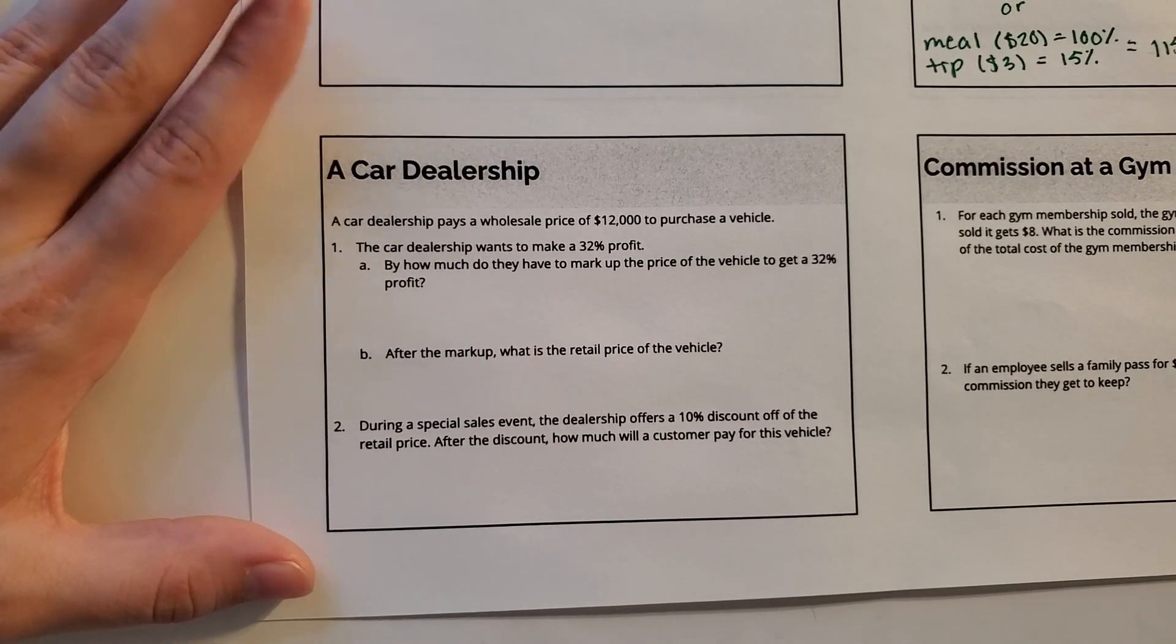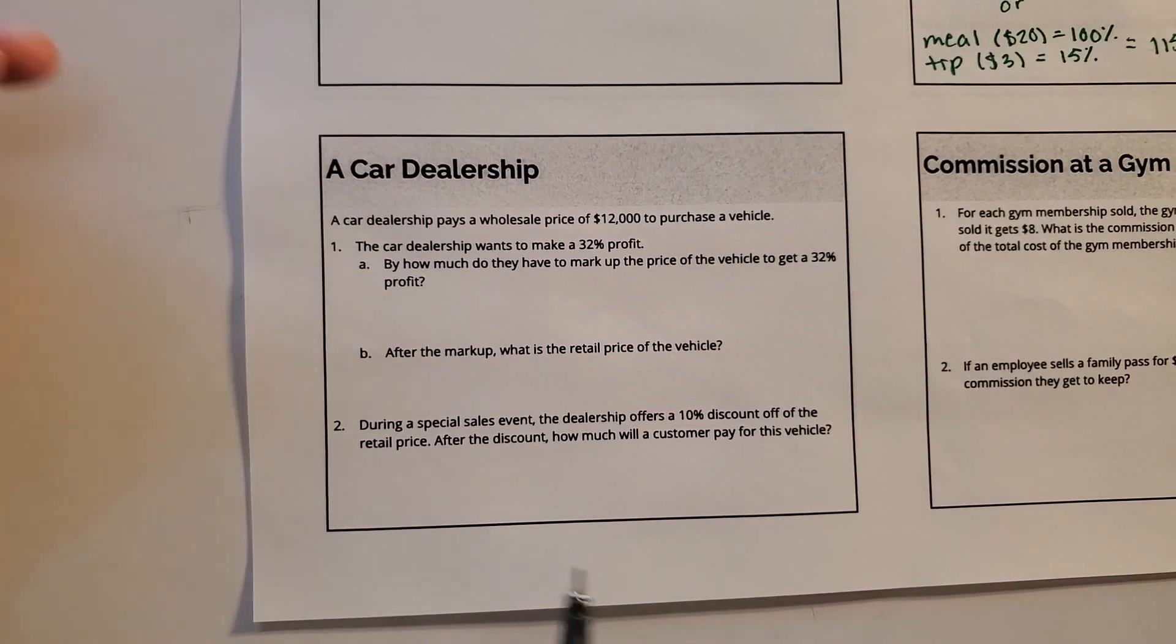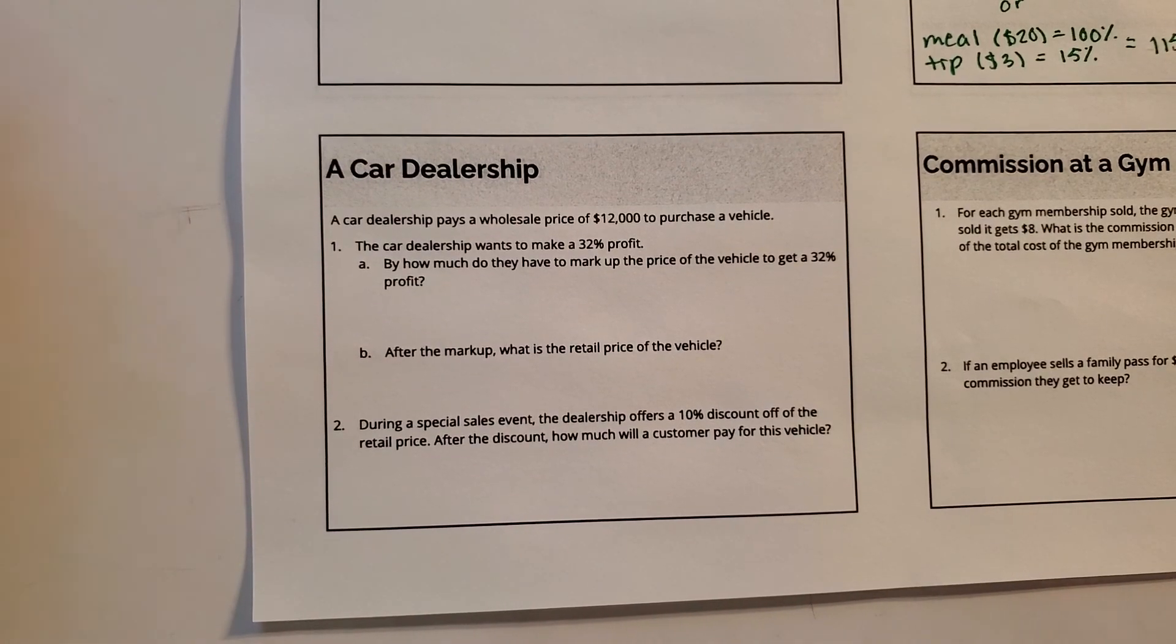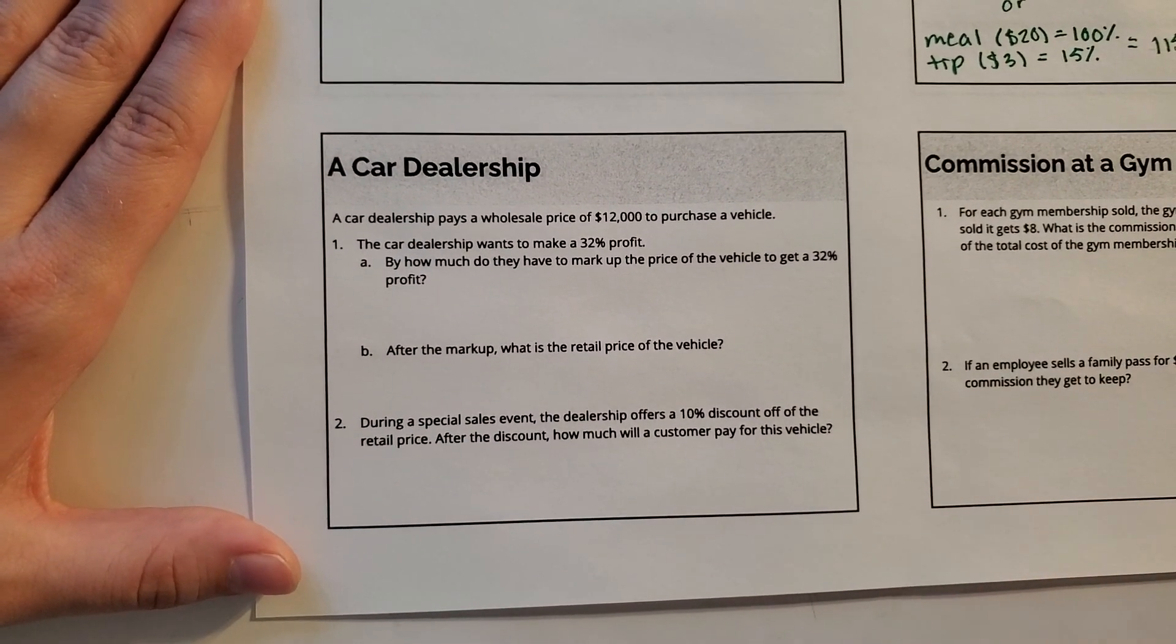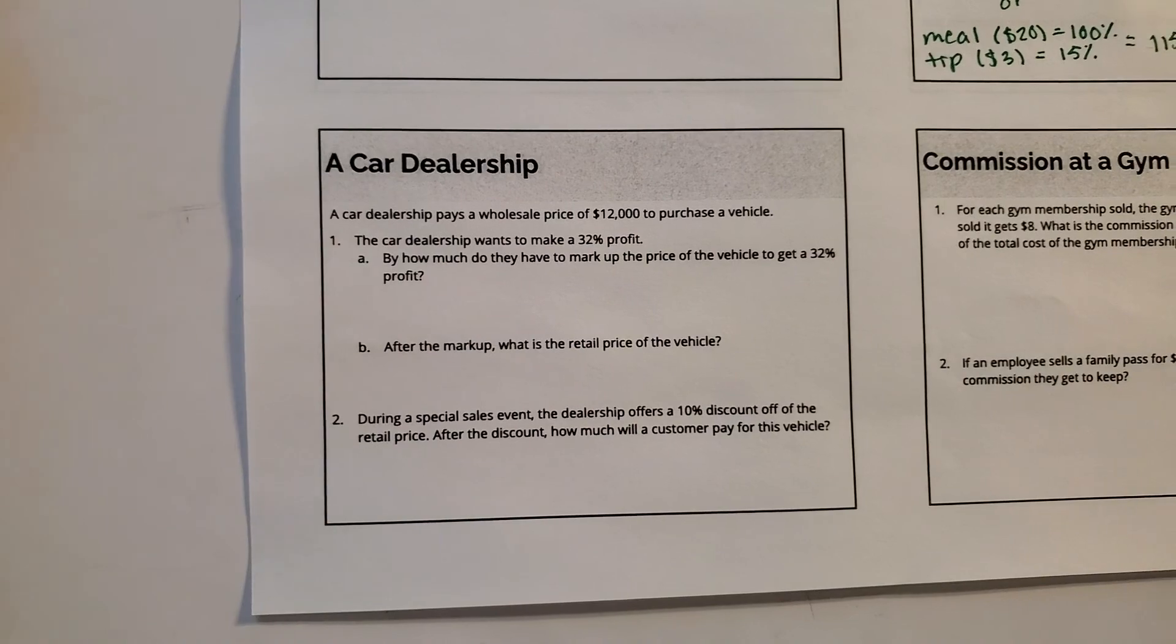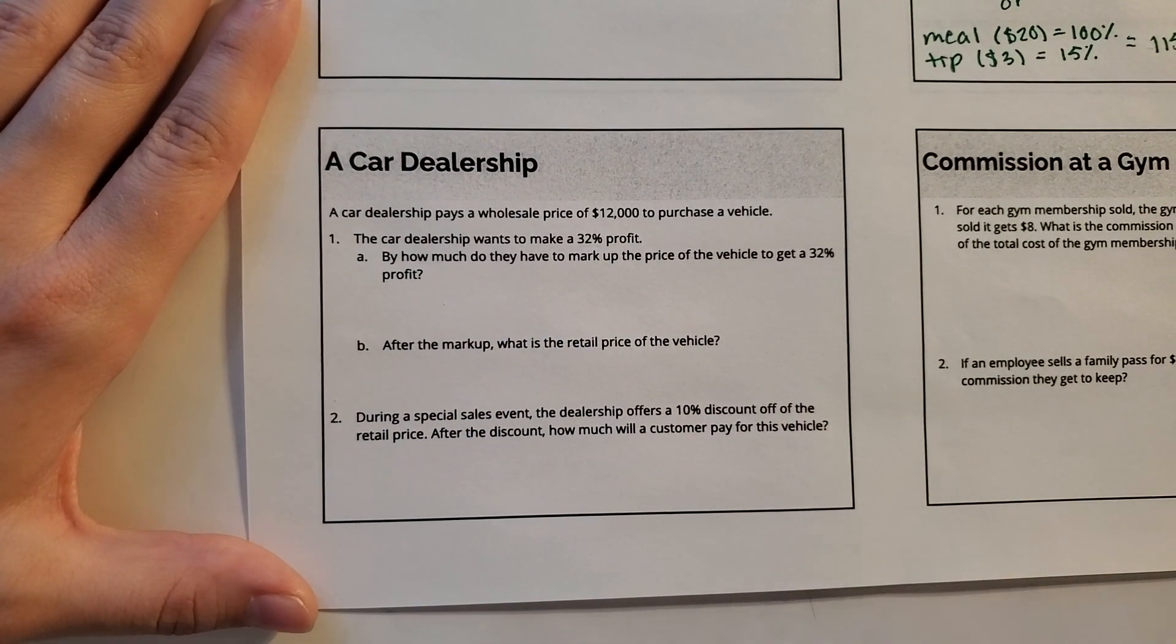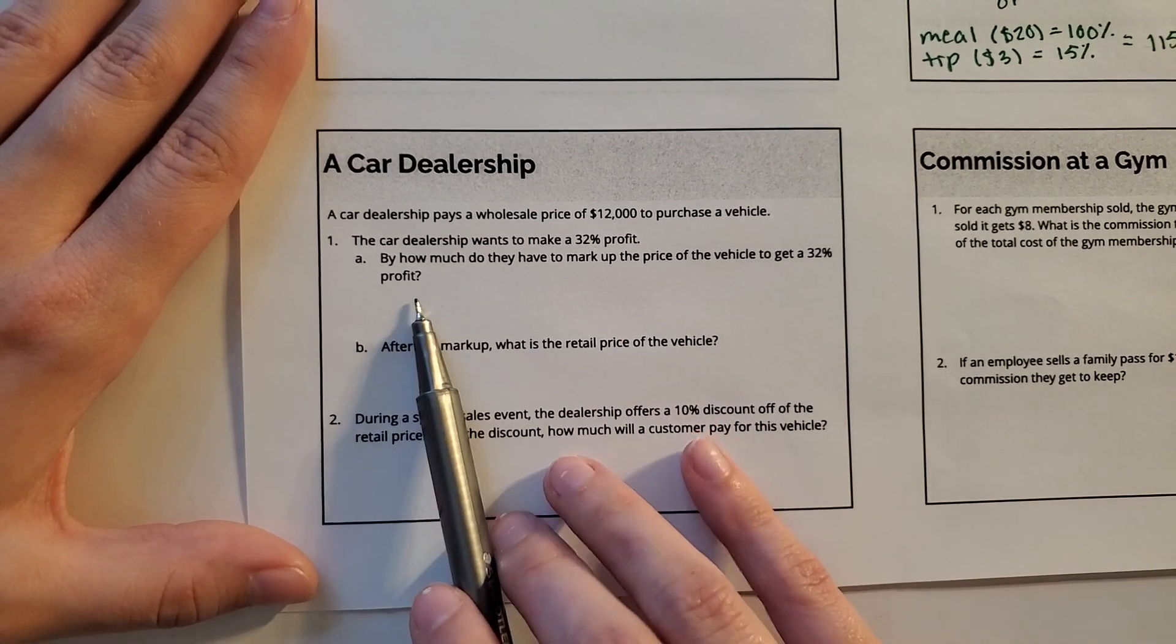So a car dealership pays a wholesale price of $12,000 to purchase a vehicle. They can get used cars from an auction. So they bought a car for $12,000, and now this dealership wants to make a profit off of it. They're going to increase the price, and they're actually going to increase it 32% to be able to make a profit off of this.